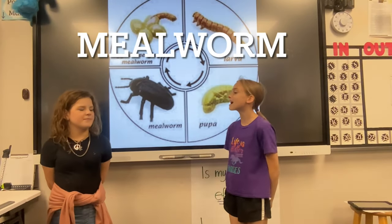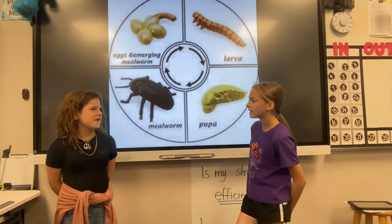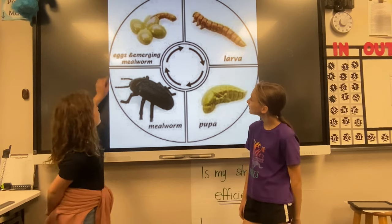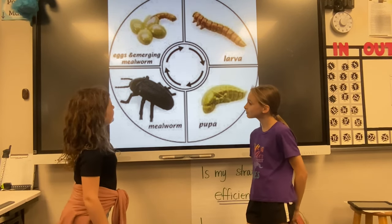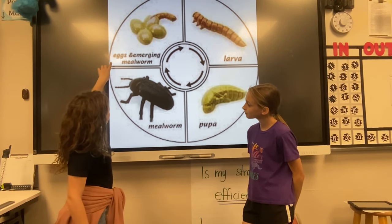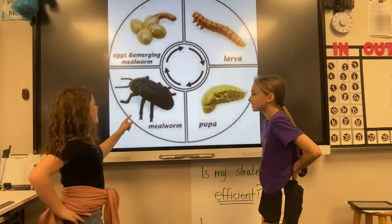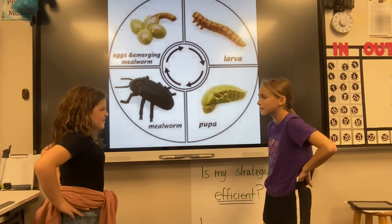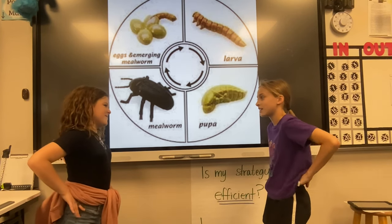My name is Rylan, and today I'm with Liliana. I've heard you have mealworms in your classroom for science. Why do you have them? Can I tell the life cycle of them? Yeah! First the egg, and then they go into mealworms, and then they turn into larva, then a pupa, and then a beetle. That sounds really cool! Are you ready for them to turn into beetles? Yeah. You think it's going to be exciting? Yeah.